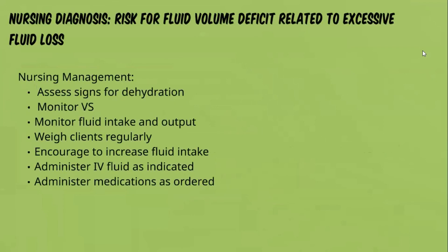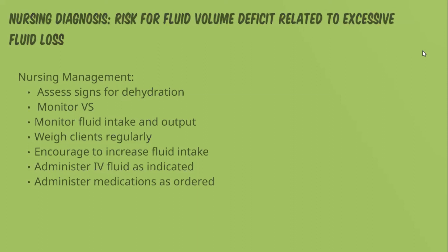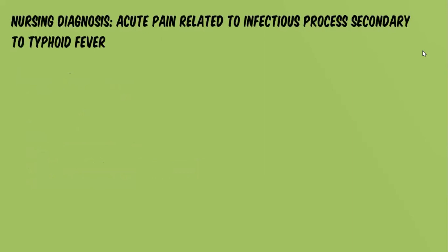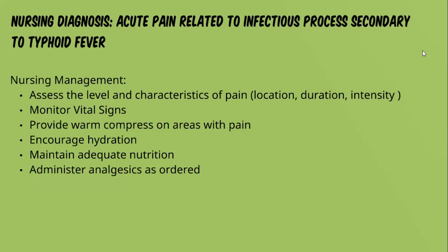Another nursing diagnosis is risk for fluid volume deficit related to excessive fluid loss. Nursing management includes assessing signs of dehydration, monitoring vital signs, monitoring fluid intake and output, weighing the client regularly, encouraging increased fluid intake, administering IV fluids as indicated, and administering medications as ordered. The third nursing diagnosis is acute pain related to the infectious process secondary to typhoid fever. Management includes assessing the level and characteristics of pain — location, duration, and intensity — monitoring vital signs, providing warm compresses to areas of pain, encouraging hydration, maintaining adequate nutrition, and administering analgesics as ordered.